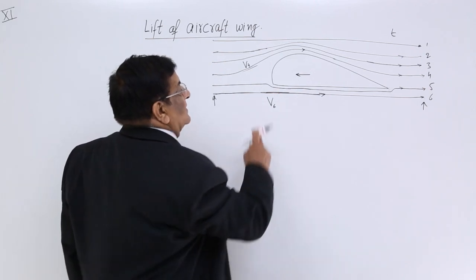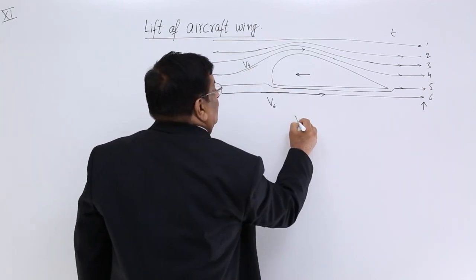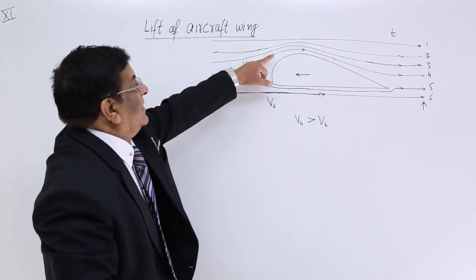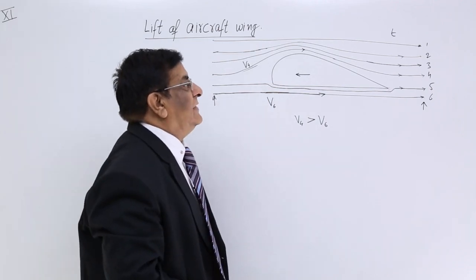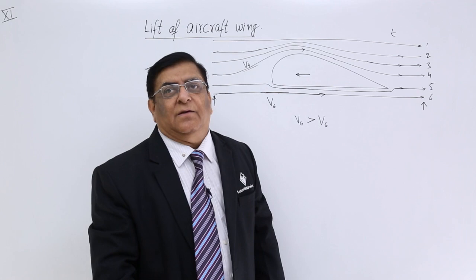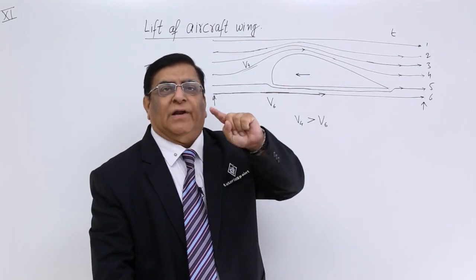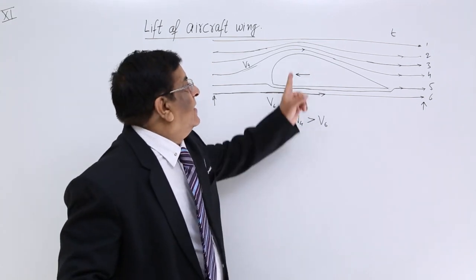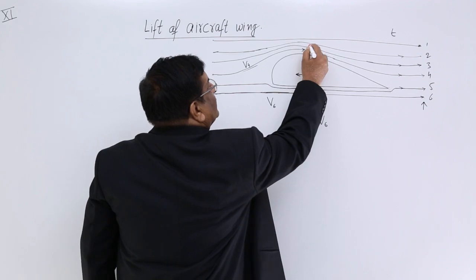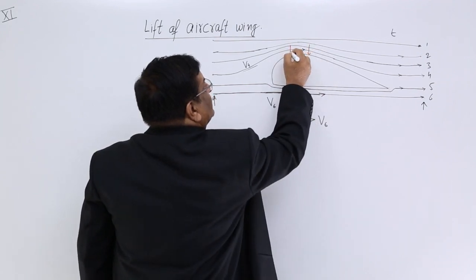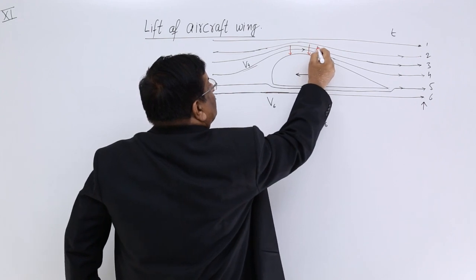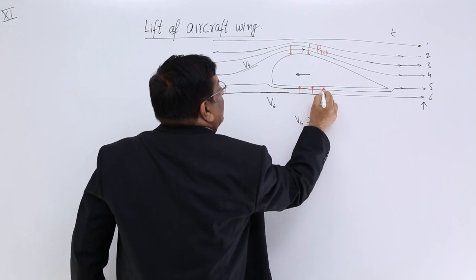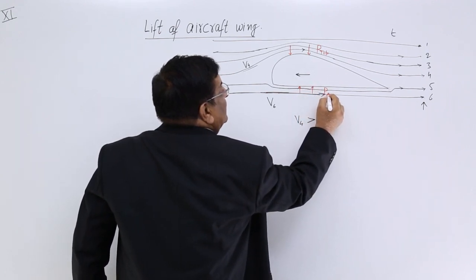There is a difference in velocity: v4 is larger than v6. If this velocity is larger and this velocity is smaller, then according to Bernoulli's principle in streamline flow, wherever velocity is large the pressure becomes less. So here the pressure becomes less at the top. Suppose this is the pressure at the top, and this is the pressure at the bottom layer, lower layer.